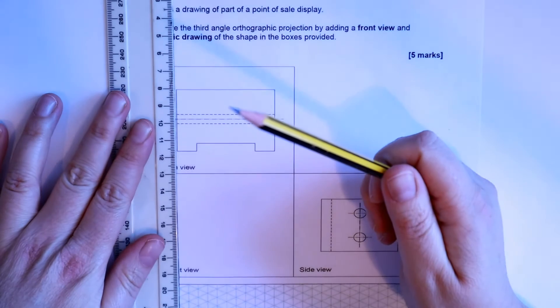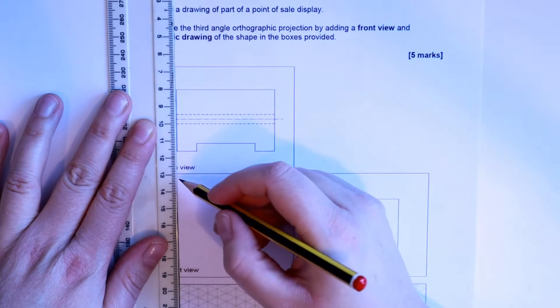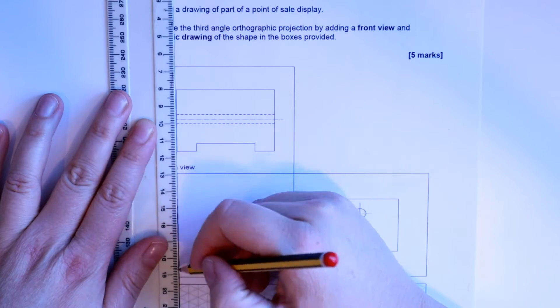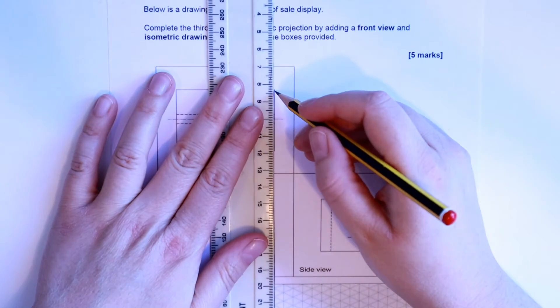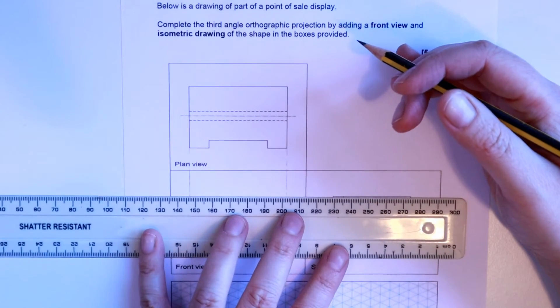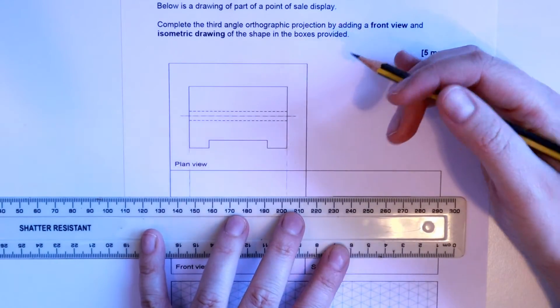So the first thing I'm going to do is draw down projection lines really lightly so I know where I need to draw my front view. I'm going to do that from the plan view, and then I'm also going to do that from the side view, making sure my ruler lines up perfectly.